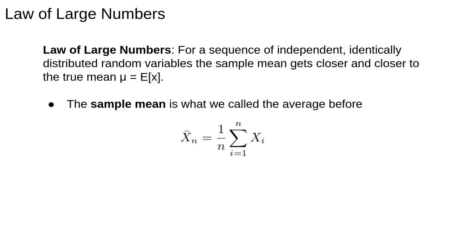The sample mean is what we call the average before and we calculate it from real data by summing up all the values and dividing by the total number. So the law of large numbers is a link between samples which we have in practice and distributions which are theoretical constructions.